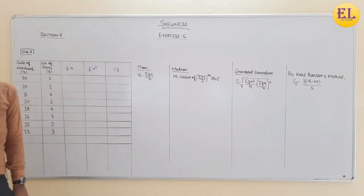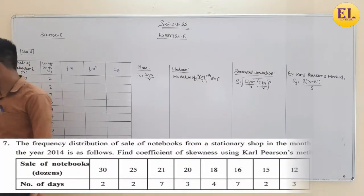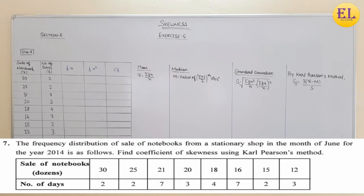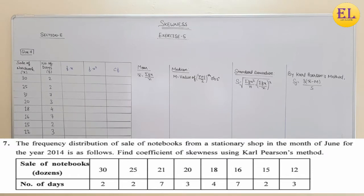Hello students, in this video we will solve question number 7 of section E. Let's read the question. The frequency distribution of sale of notebooks from a stationary shop in the month of June for the year 2014 is as follows.